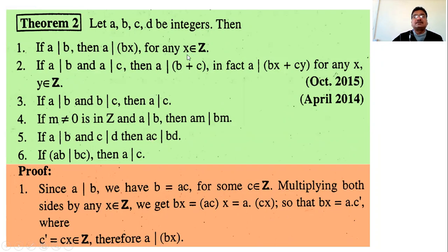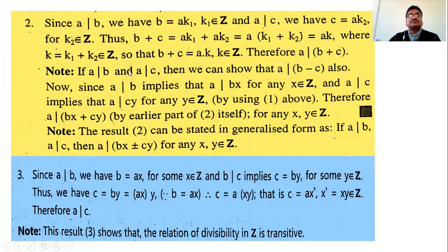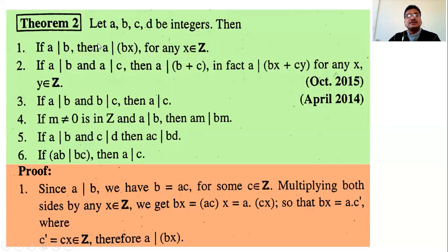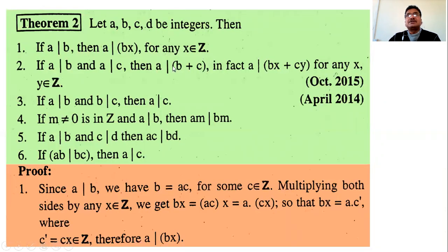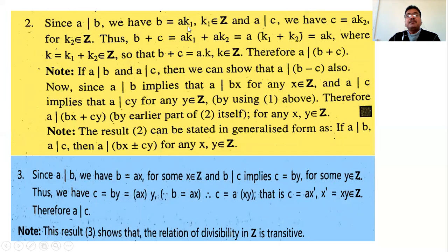For the second theorem: given a divides b and a divides c, show a divides b+c. Since a divides b, we have b = a·k1 for some integer k1. Since a divides c, we have c = a·k2 for some integer k2. Now consider b+c = ak1 + ak2 = a(k1+k2). Let k = k1+k2; since k1 and k2 are integers, k is also an integer. Therefore b+c is expressed as a times some integer, which means a divides b+c.